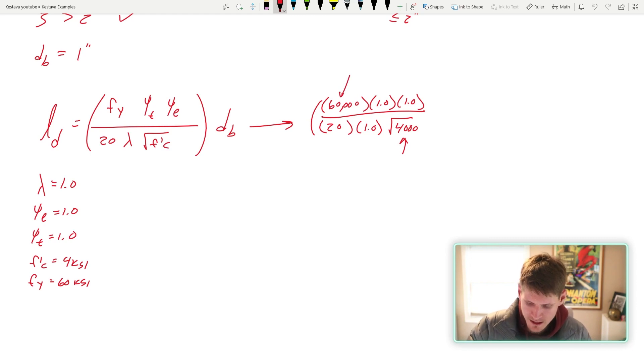Just remember that your f prime c is under a square root, which means that you can't just use 4 for ksi, you need to keep it in terms of psi, which means you also need to keep your yield stress in terms of psi as well, 60,000 times the diameter bar one inch for number eight. And that spits out 47.4 inches, which I'm going to round up to 48 inches so that the contractor doesn't want to kill me.